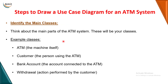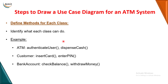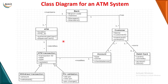To draw a class diagram, the first step is to identify your classes. In an ATM system, the classes are ATM, Customer, Bank Account, and Withdrawal, because each of these has its own attributes and methods. For example, ATM has attributes location and ATM ID; Customer has name and customer ID; Bank Account has account number and balance. Methods include ATM authenticating the user and dispensing cash, Customer inserting card and entering PIN, and Bank Account checking balance and withdrawing money.